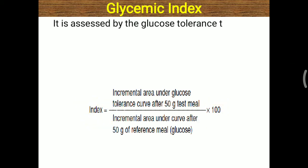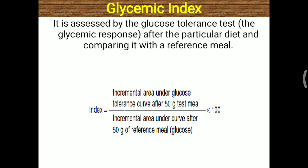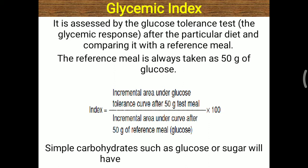In detail, the glycemic index is assessed by the glucose tolerance test. The glycemic response means the plasma glucose level after a particular diet or foodstuff is given and compared with a reference meal — always 50 grams of glucose. Simple carbohydrates such as glucose powder or refined sugar will have a high glycemic index because they are immediately and easily absorbed, leading to a sudden rise in plasma glucose.